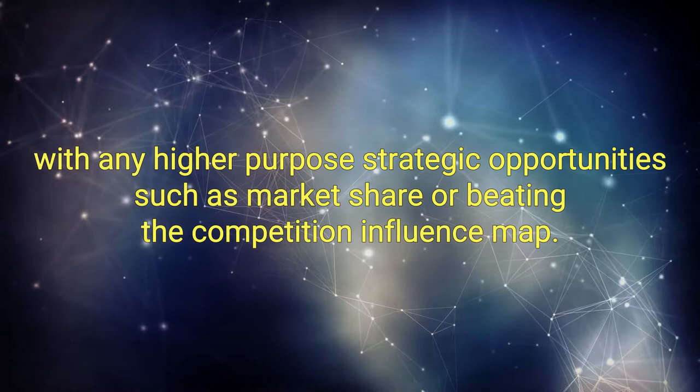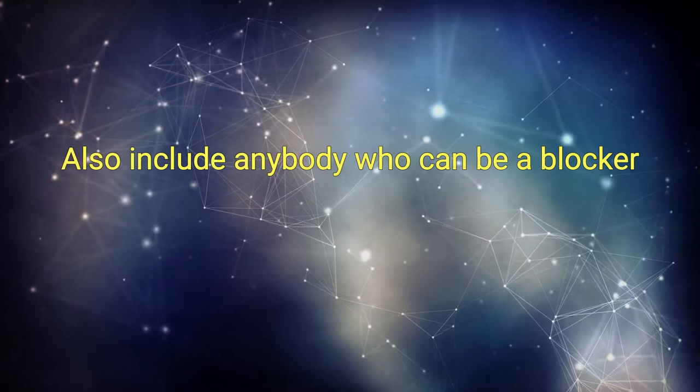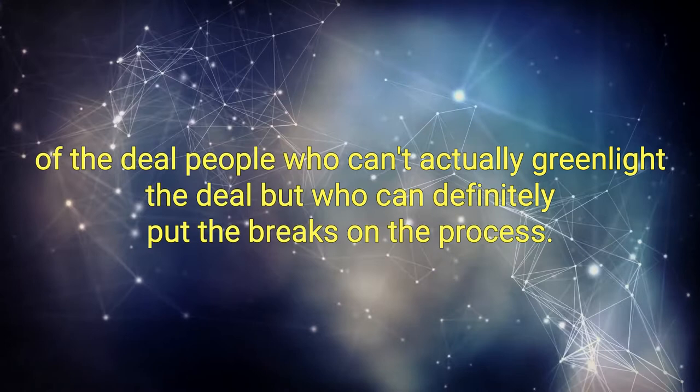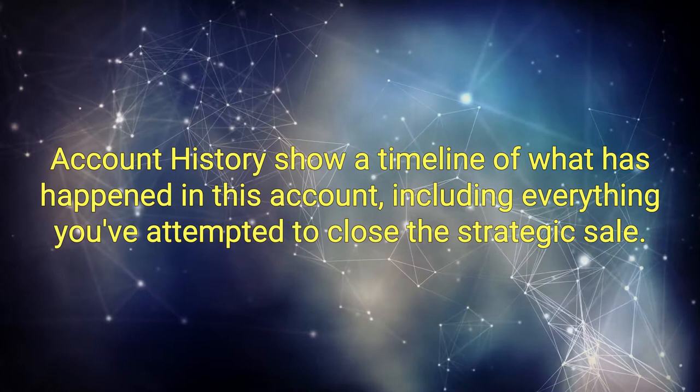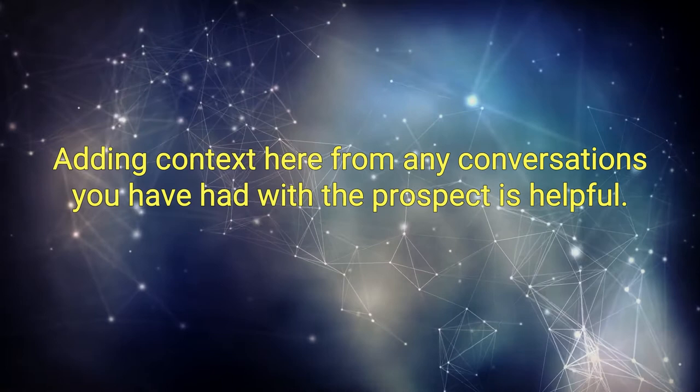Opportunity statement. This should include the revenue opportunity along with any higher purpose strategic opportunities such as market share or beating the competition. Influence map. This is where you lay out the decision makers who make up the buying web. Also include anybody who can be a blocker of the deal. People who can't actually green light the deal but who can definitely put the brakes on the process. You should provide a direct link or bio or more information for each player here. Account history. Show a timeline of what has happened in this account including everything you've attempted to close the strategic sale. Adding context here from any conversations you've had with the prospect is helpful.